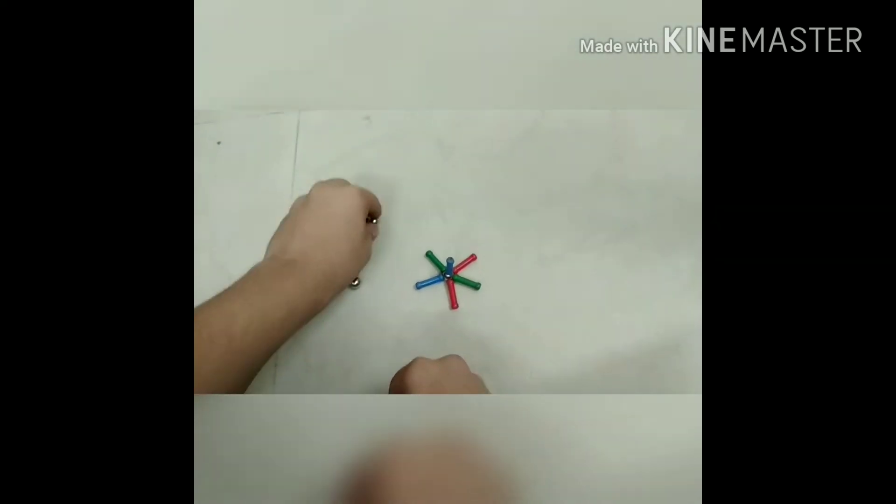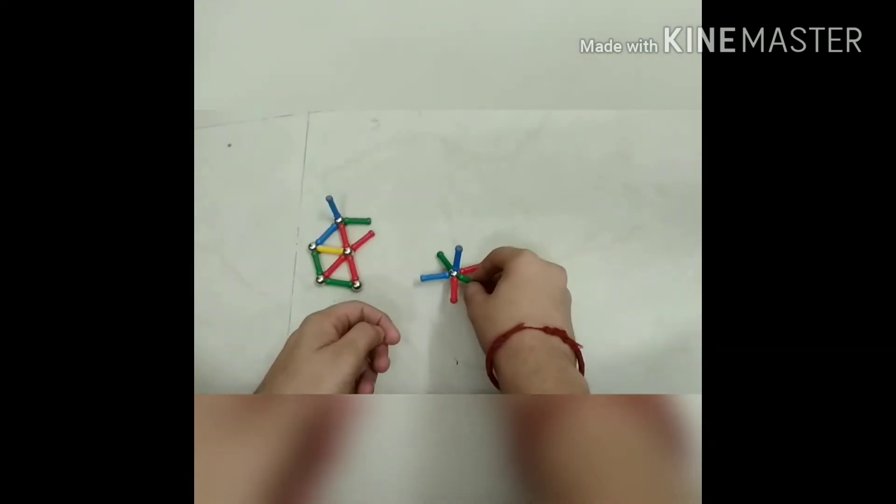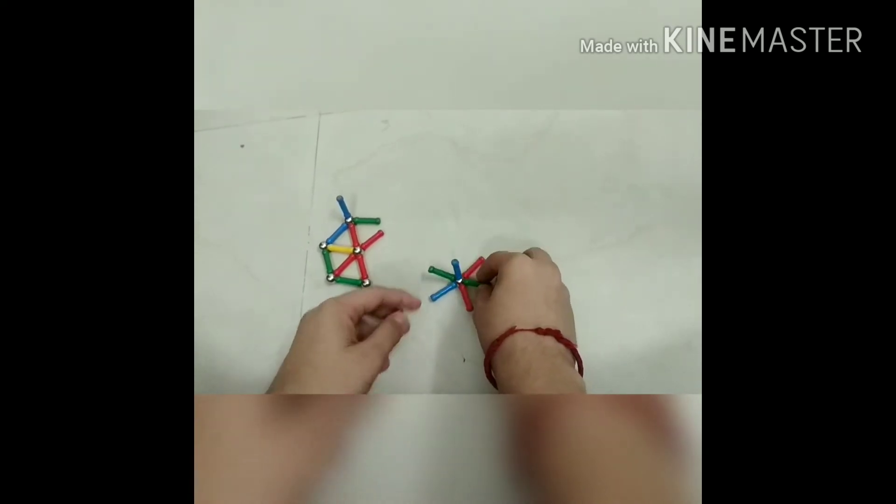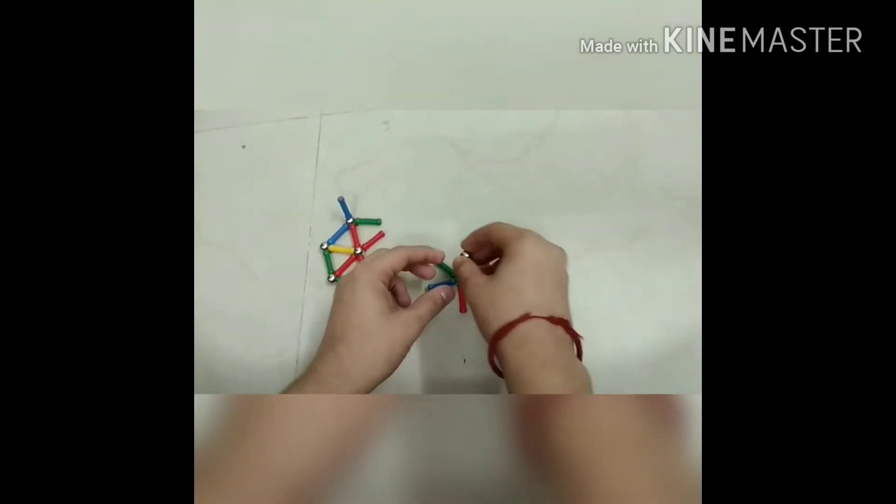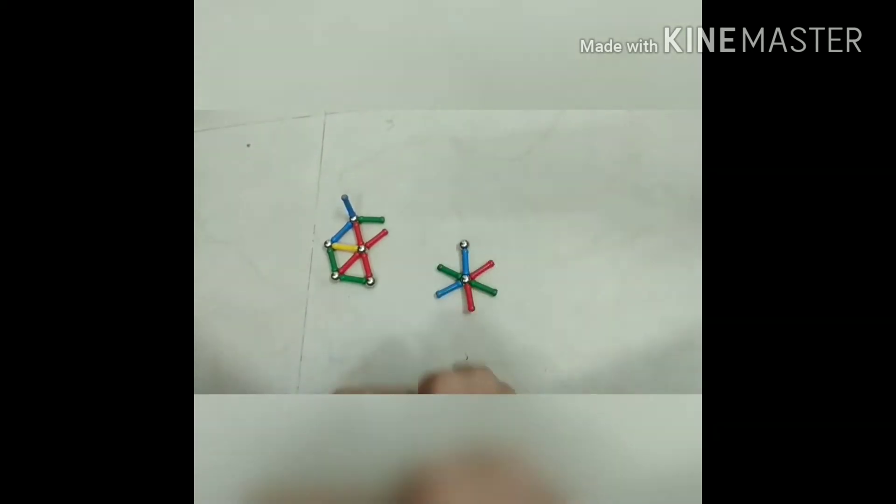Now we will connect the topmost magnetic stick, the blue one, with another magnetic ball and place it vertically on top.